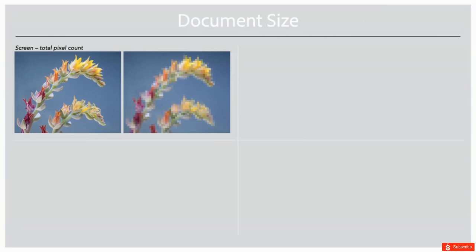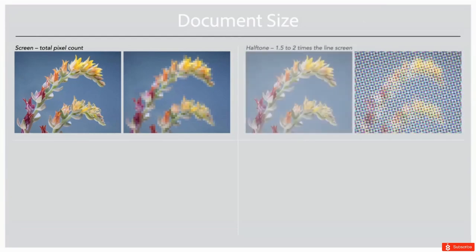When we look at the CMYK color space, we can see that the color space used to output files to a conventional printing press is quite limited. In the past, some designers worked in CMYK because the work was only going to be output to a printing press. But today this is less popular because so much of the content we create is purposed for both print as well as on-screen.